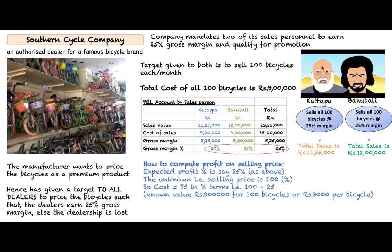To compute the selling price: take rupees 9,000 and multiply by 100, then divide by 75 — because cost is 75% and selling price is 100%. The answer is rupees 12,000 per bicycle, or rupees 12 lakh for 100 bicycles. That's how you compute profit on selling price. This is very important. Hope you've understood this — thank you for your patient listening, goodbye.